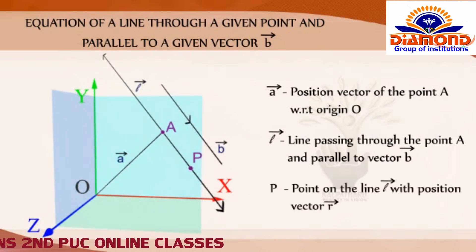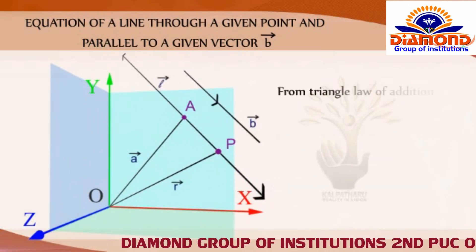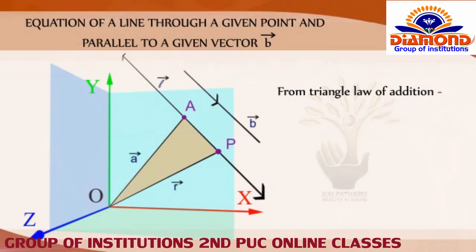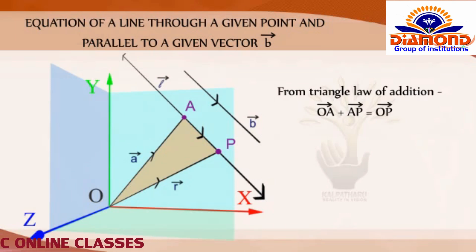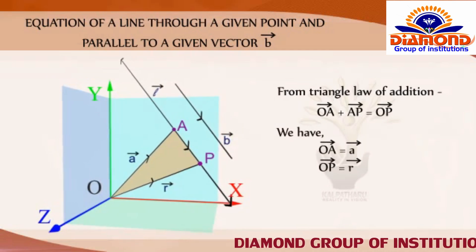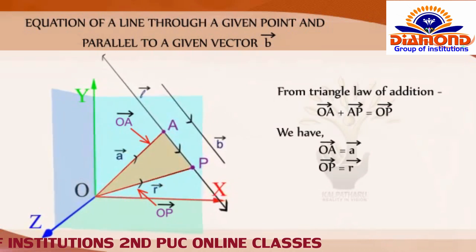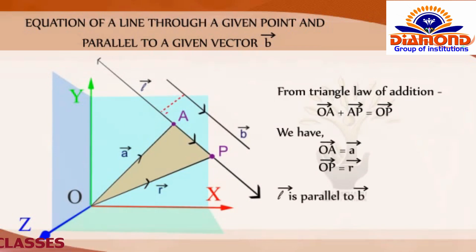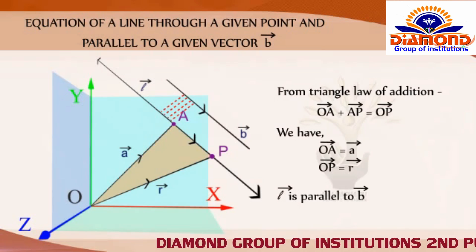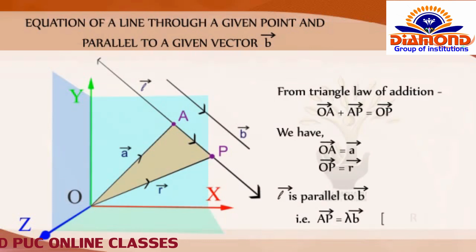Let P be any arbitrary point on the line L with position vector R bar. From the triangle law of vector addition, we have OA bar plus AP bar equals OP bar. But OA bar equals A bar and OP bar equals R bar. Since the line L is parallel to the given vector B bar, AP bar can be written as AP bar equals lambda times B bar, for some real number lambda.